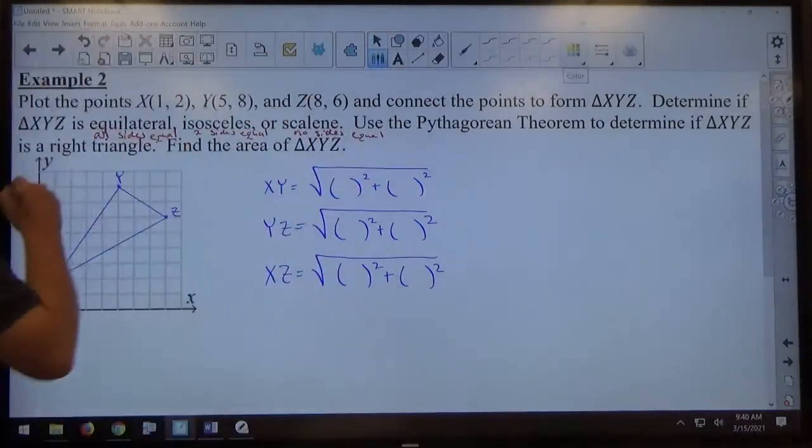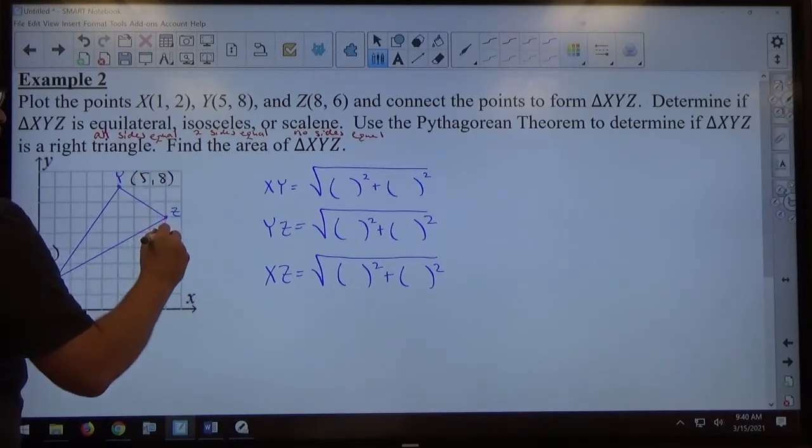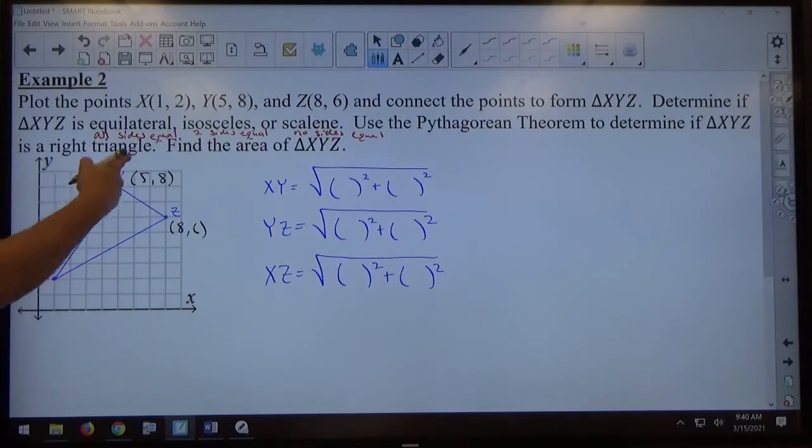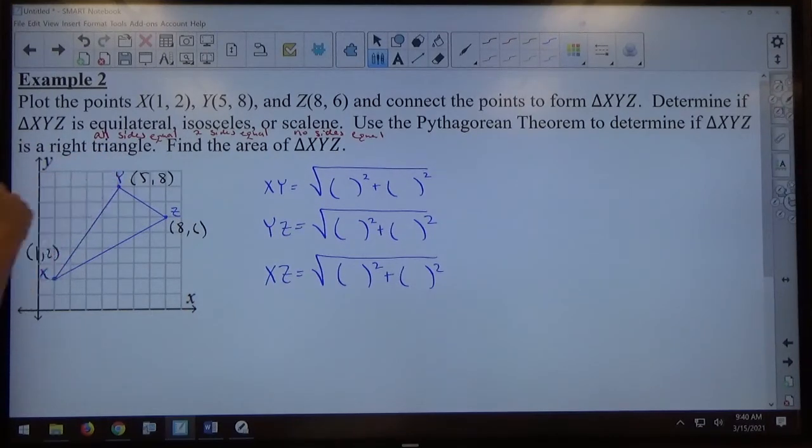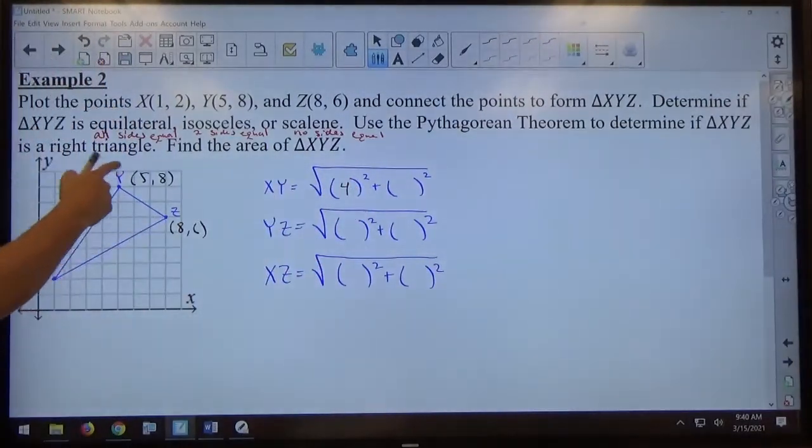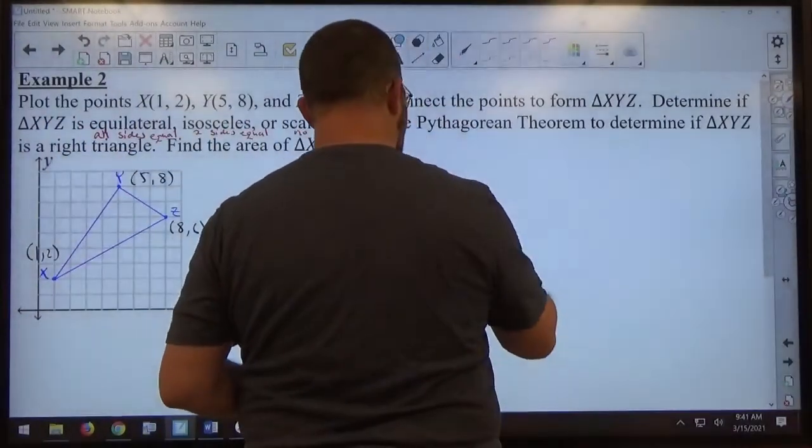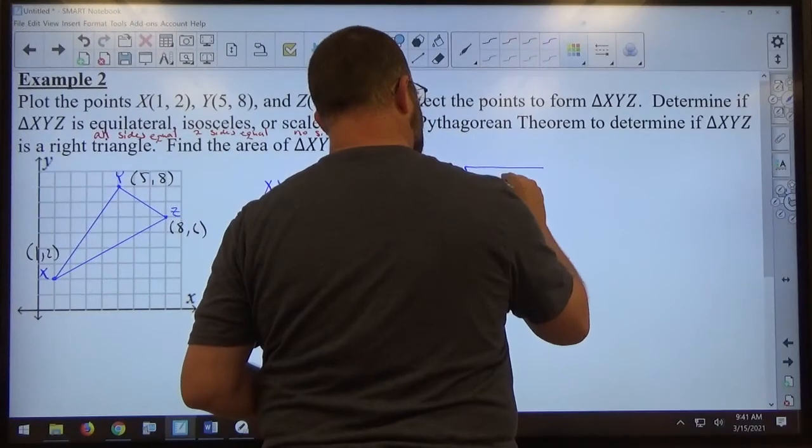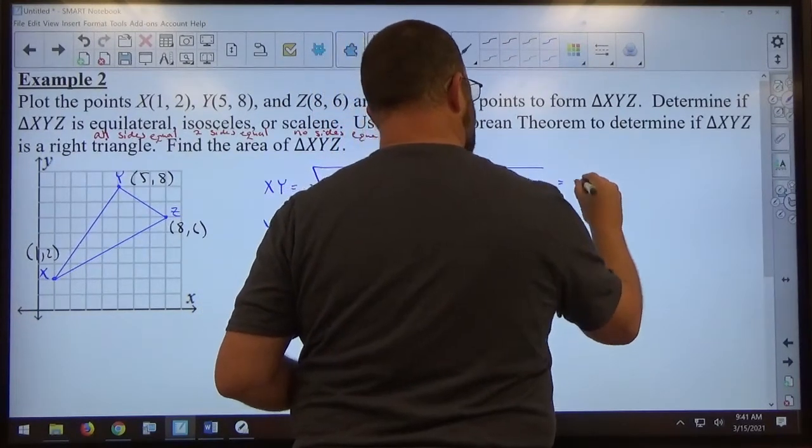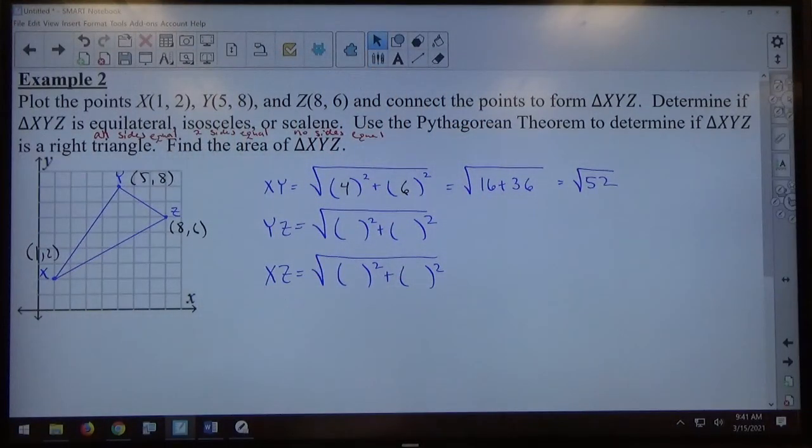If you recall the points as we plotted them, this one was 1, 2. This one is 5, 8, and this one is 8, 6. So I'm doing XY first. How far is it from 1 to 5? 4. How far is it from 2 to 8? 6. Again, that's all we're doing for distance formula. How far are the X's? How far are the Y's apart? And if I work that out, I'm going to get the square root of 16 plus 36, which equals the square root of 52. For the sake of what we're doing, leaving it as an exact answer, square root of 52 is probably easier. So square root of 52 is that length.